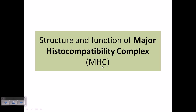The name 'major histocompatibility complex' tells us a lot. There are different types of cells inside our body, and those cells possess some type of tissue specificity. For example, my tissues have a particular specificity towards their own tissues. White blood cells have specificity towards those tissues, so if you put my own blood cells into tissue, they won't counter-attack each other because they can recognize each other as their own.